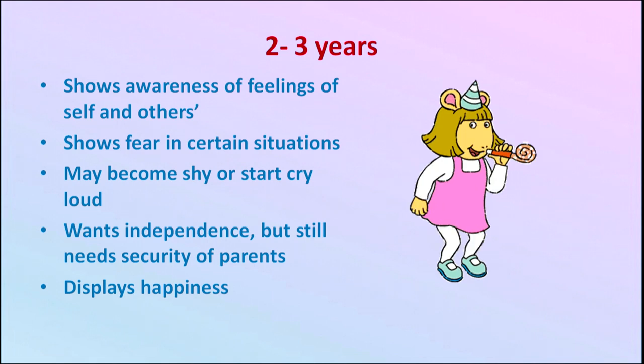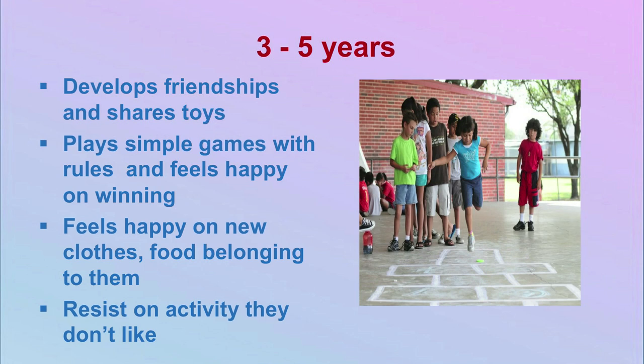From 3 to 5 years, children are getting along with others and show marked transition from earlier stages. They develop friendships, share toys, play simple games with rules, feel happy on winning or receiving new things, and resist activities they do not like. They have their own choices, know what kind of activities they want to play, develop friendships, and really trust them. This completes the social-emotional development from three to five years.